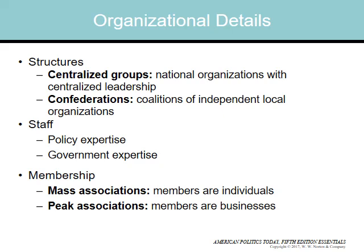Different organizational structures have trade-offs. Centralized organizations — national organizations with centralized leadership — can be more efficient but don't tend to learn what their members want. Confederations, which are coalitions of independent local organizations, have a good understanding of what their members want but are often beset by conflict as one local chapter's goals conflict with the goals of another.